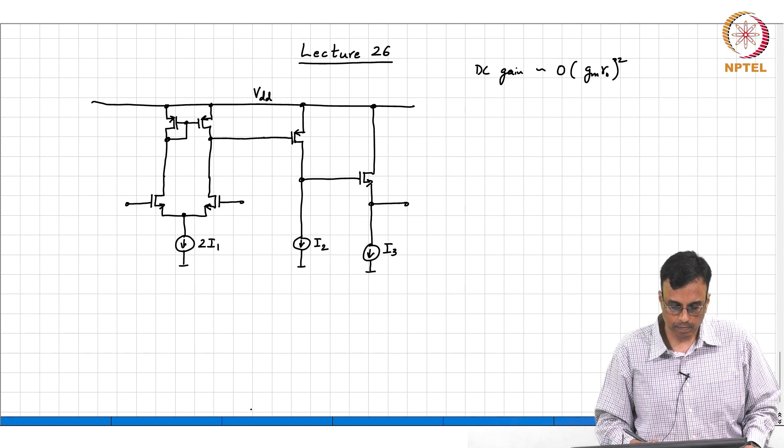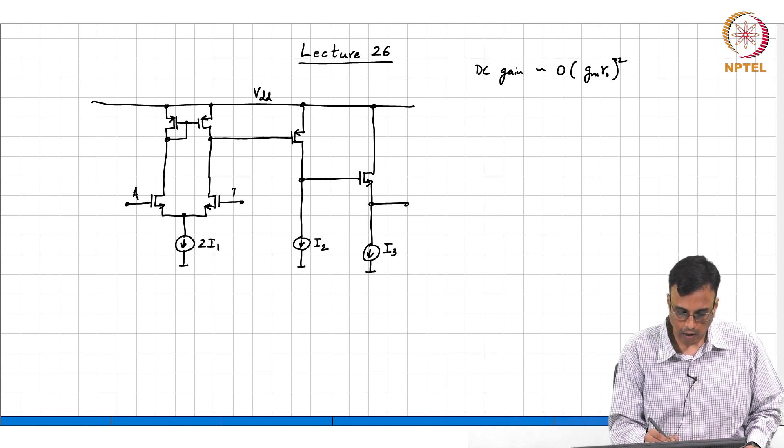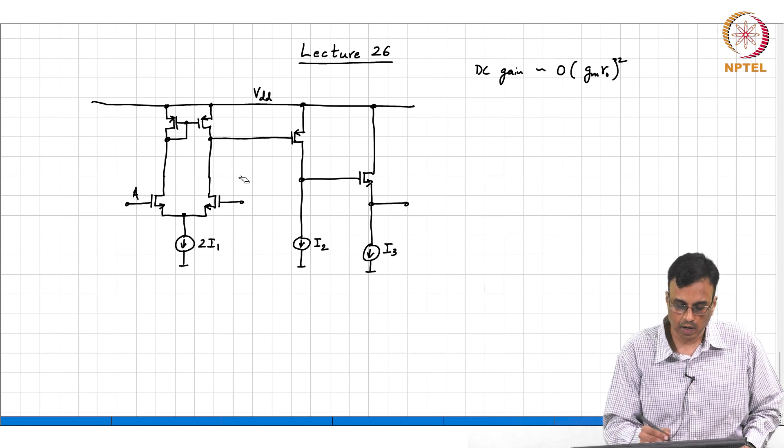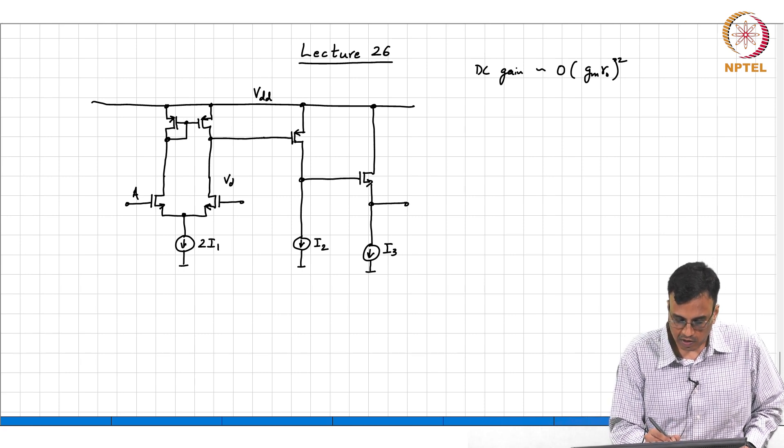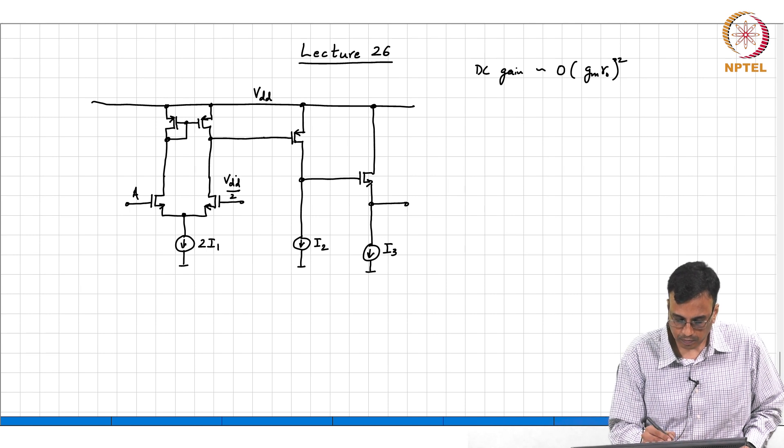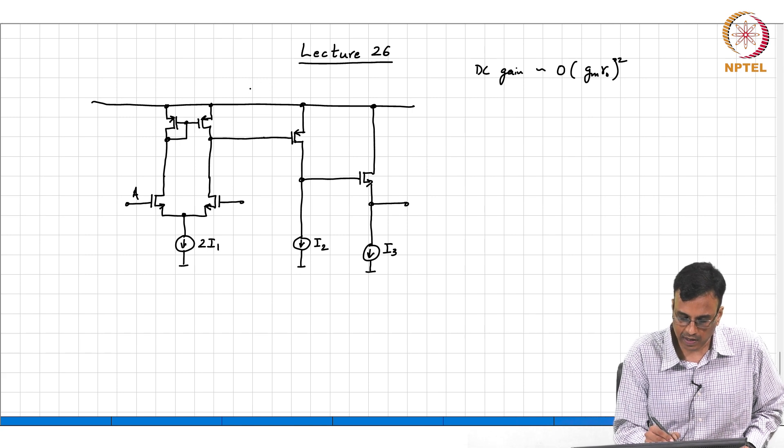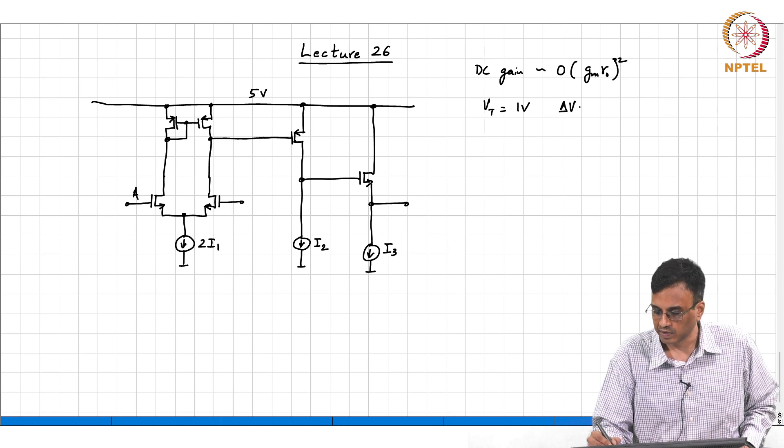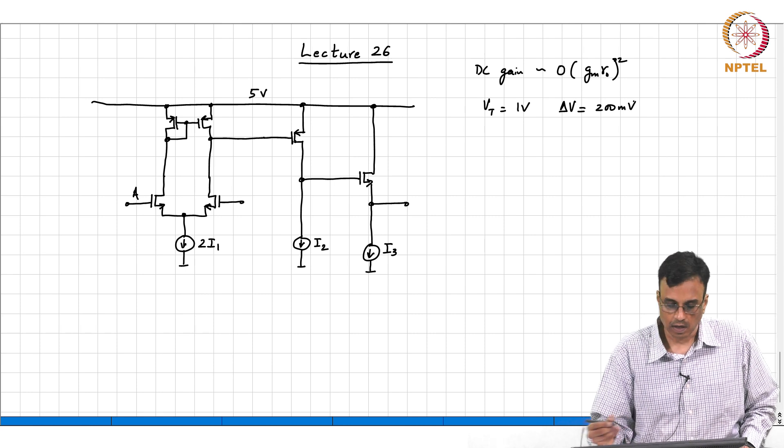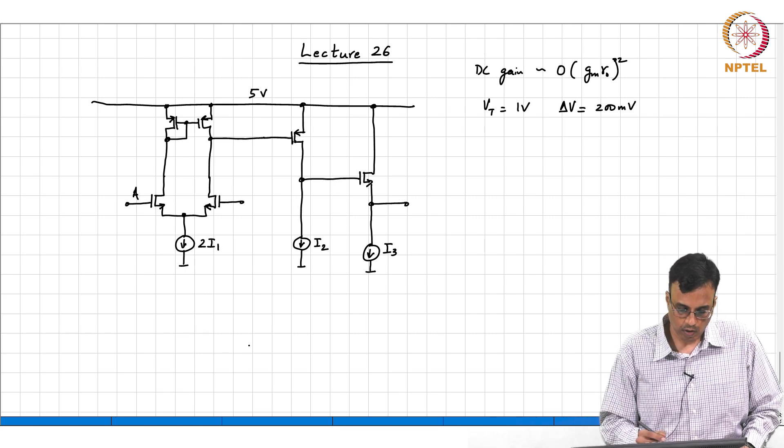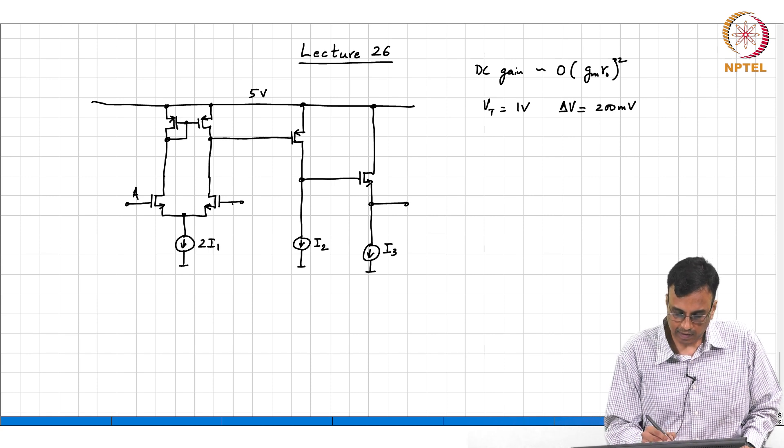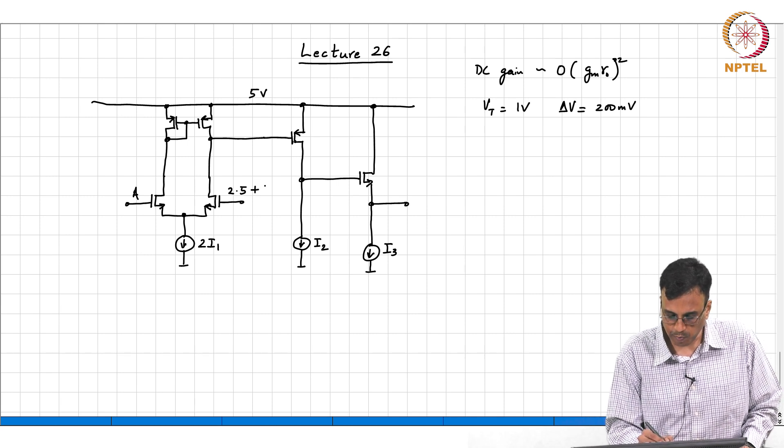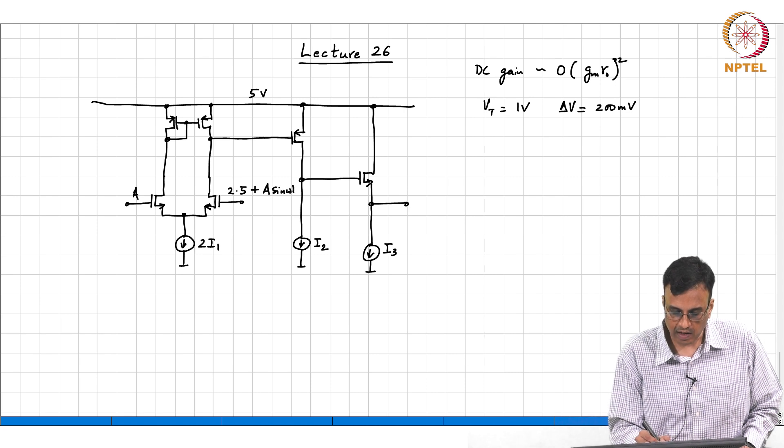Now, which is the positive terminal of the op amp, A or B? B is the positive terminal. And so, let us say we put an input at B. We also discussed yesterday the notion of, I will just take values for argument sake. Let us say this is 5 volts, let us say Vt is 1 volt and delta V for all transistors is say 200 millivolts. And so, the input must be hovering around Vdd by 2. So, this is 2.5 plus some A sin omega t, that is the input.